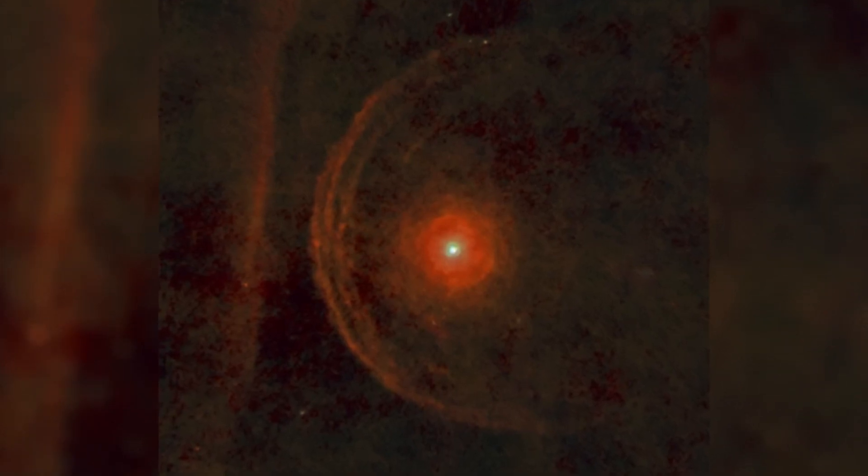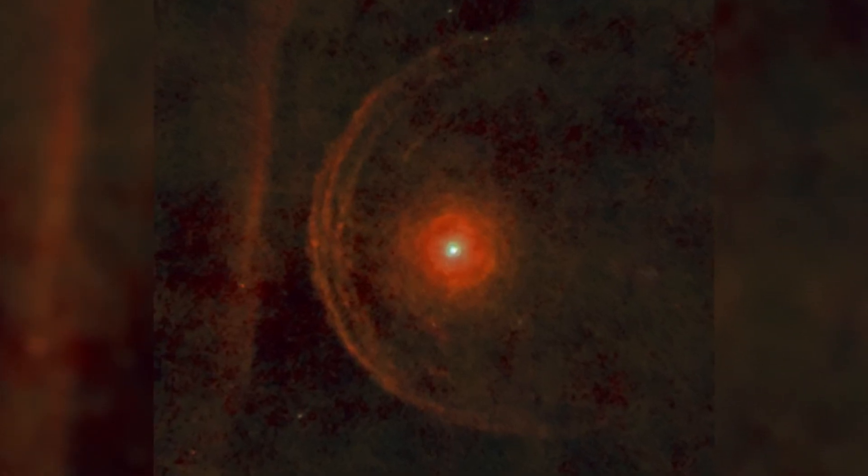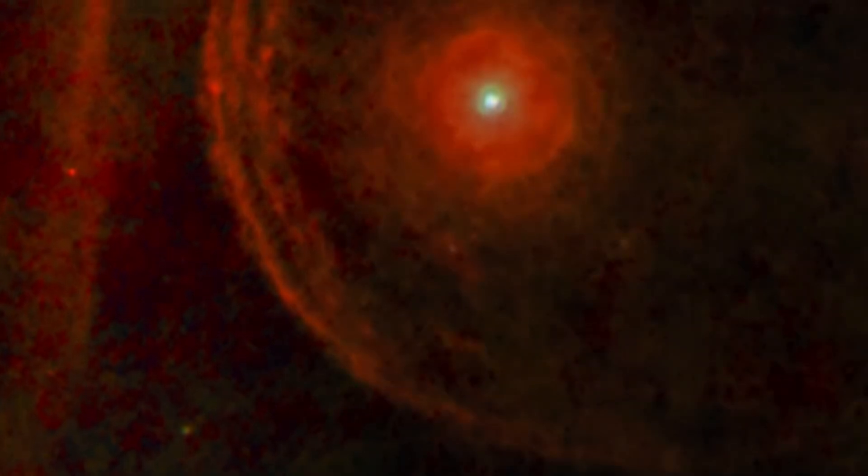Furthermore, these observations allow astronomers to determine essential parameters such as the temperature, speed, and chemical composition of the dispersed material. Information that is fundamental for refining theoretical models of red supergiant evolution and their imminent supernova explosions.